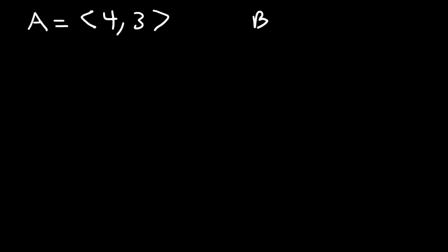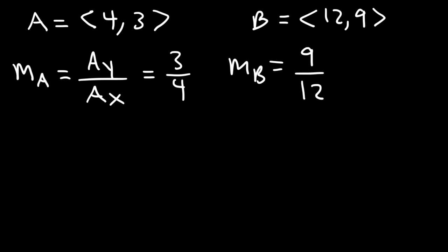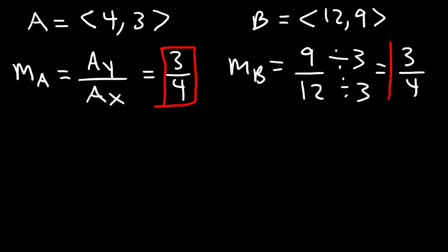Let's try another example. Let's say vector A is (4, 3) and vector B is (12, 9). Are the two vectors parallel, orthogonal, or neither? Let's analyze the slope of each vector. For vector A, it's 3 divided by 4. For vector B, the Y component is 9 and the X component is 12. We can reduce 9 over 12 by dividing both by 3, giving us 3 over 4. Notice that the slopes for vectors A and B are the same — so these two vectors are parallel.